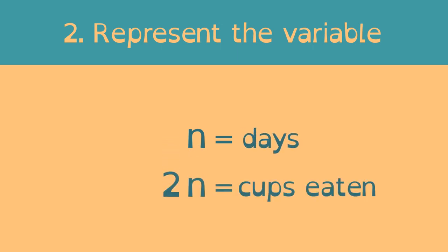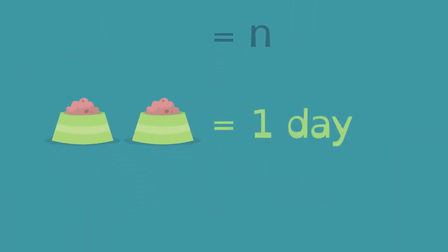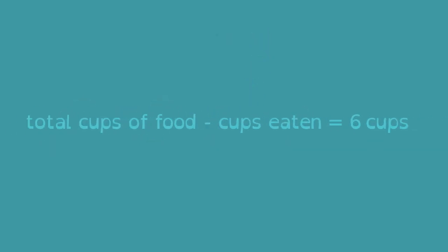2n represents the number of cups eaten. Here's why. Since every two cups eaten represents one day, the number of cups eaten can be found by multiplying 2 times n. Let's put it all together.